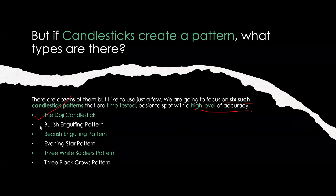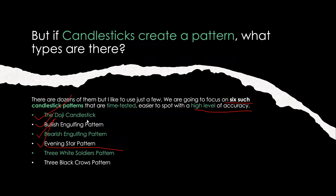We've got the doji, the bullish engulfing, the bearish engulfing, the evening star — my favorite — the three white soldiers, and the three black crows. It's 2021, so maybe we should just call these the three soldiers and the three crows — non-gender, non-binary.